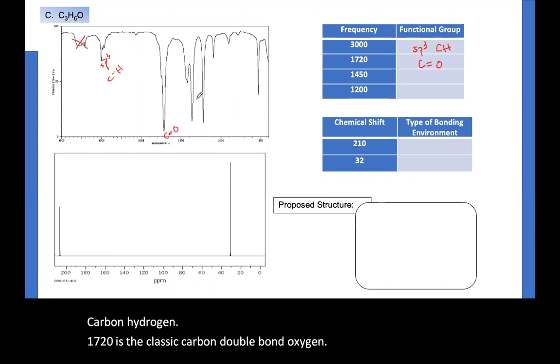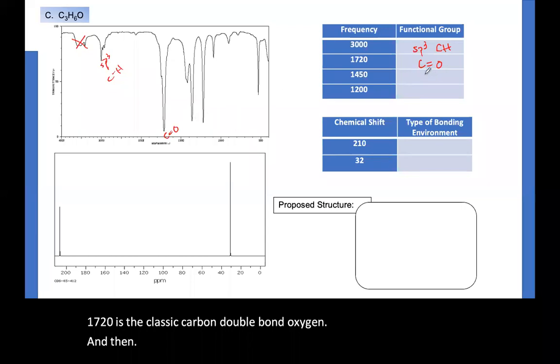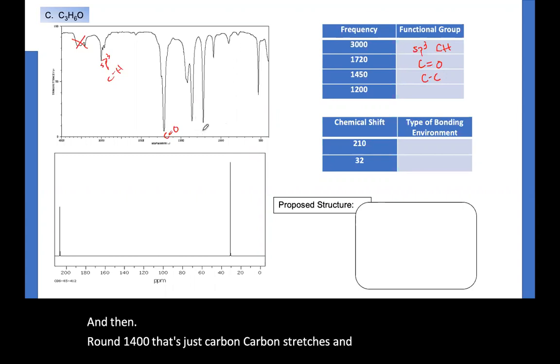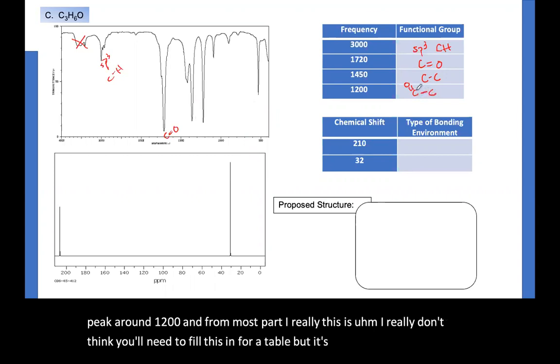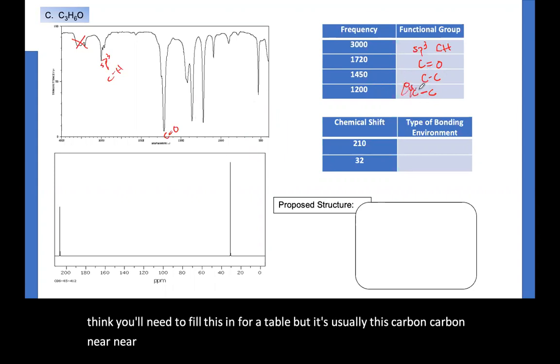And then around 1400, that's just carbon, carbon stretches. And then we often see this peak around 1200. And for most part, I really don't think you'll need to fill this in for a table. But it's usually this carbon, carbon, near a carbonyl. So I would say don't put this into your table for 201. Focus in on the peaks that you do know.